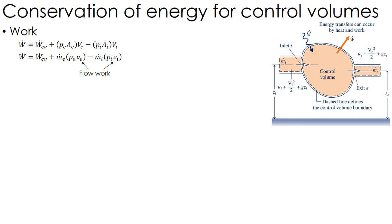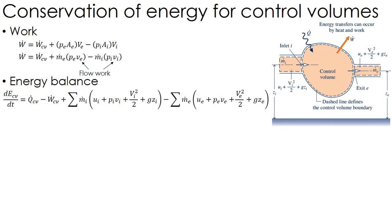Rather than using area times velocity, we have mass flow times specific volume. So reordering that, instead of using volumetric flow directly, we get p times v — what we call flow work — times the mass flow rate. That flow work is separate from the work being done by spinning a blade or similar.